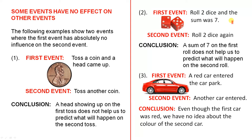Second example: the first event is you roll two dice and the sum was seven. For the second event, you roll two dice again. A sum of seven on the first roll does not help us to predict what will happen on the second roll. So the first roll has no influence on the second roll.